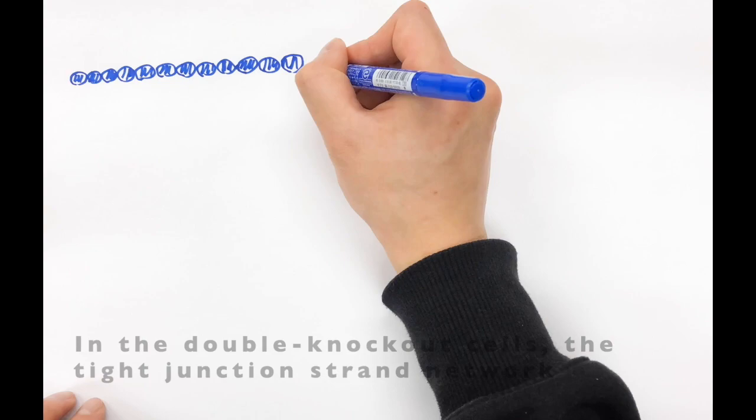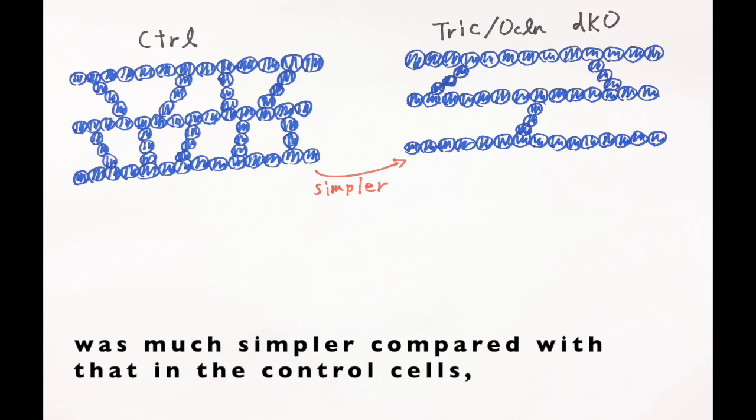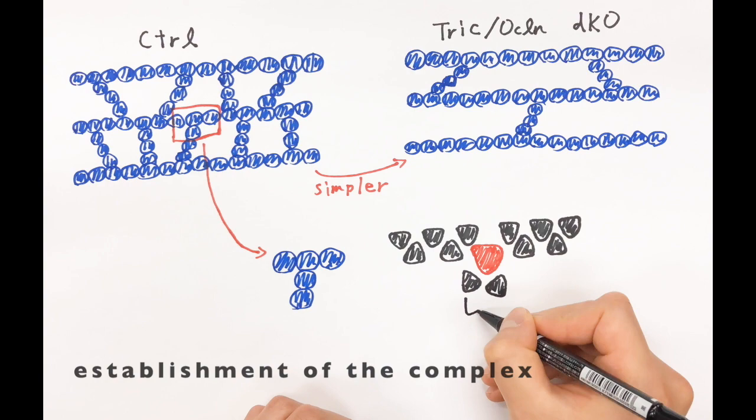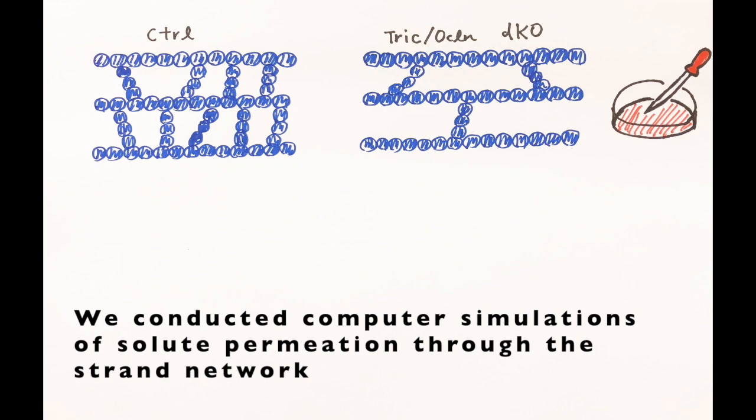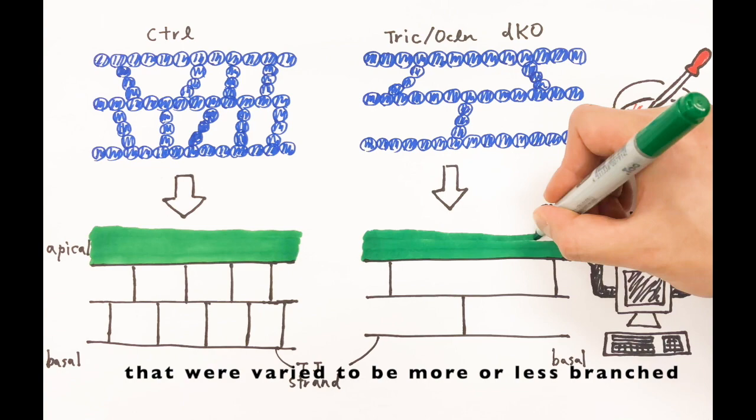In the double knockout cells, the tight junction strand network was much simpler compared with controls that had claudins, suggesting that occludin and tricellulin contribute to the establishment of the complex branched network of tight junction strands. We conducted computer simulations of solute permeation through the strand network that were varied to be more or less branched.